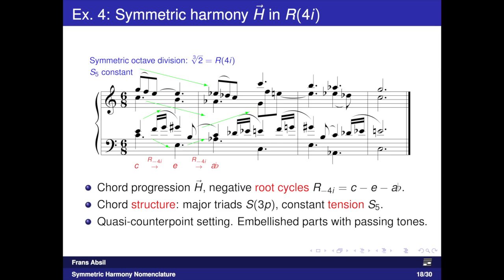Example 4 illustrates how we may create a variation on the setting from the previous example. We are still in the three-tonic symmetric system with negative root cycles and a constant tension S5 structure of major triads. What has changed is that the parts have been embellished with passing tones and a somewhat busier rhythm, resulting in a quasi-counterpoint setting. Through the instrumentation using a harpsichord, we achieve a dance-like flavor.